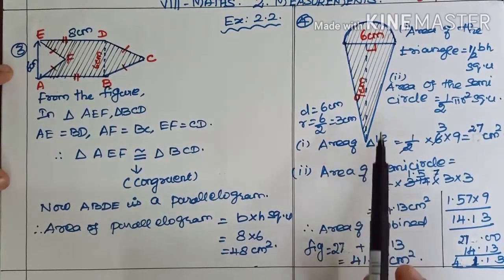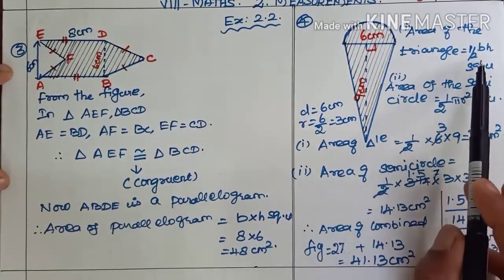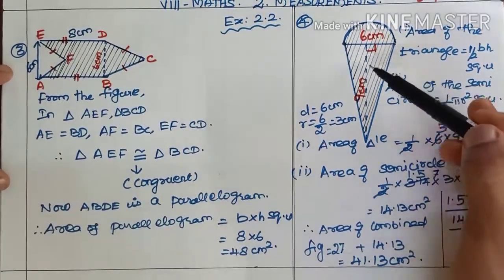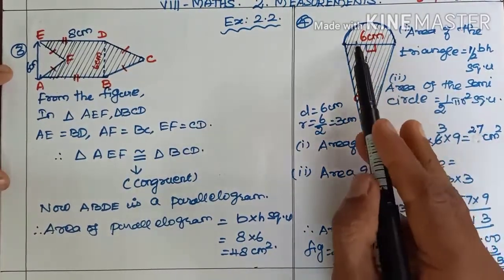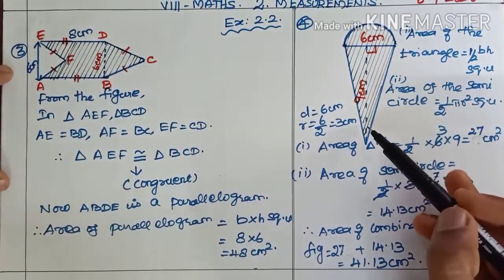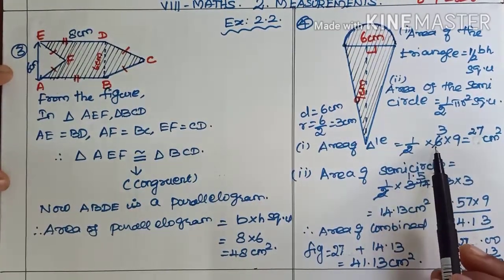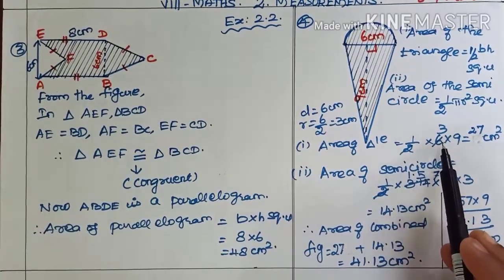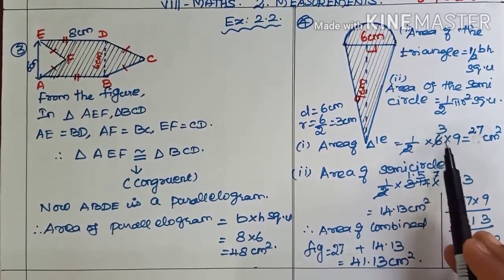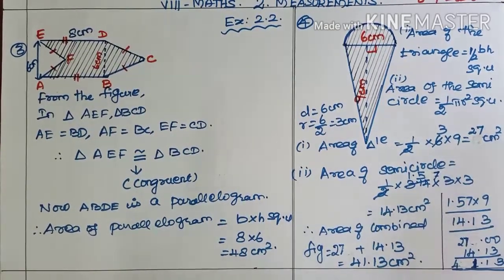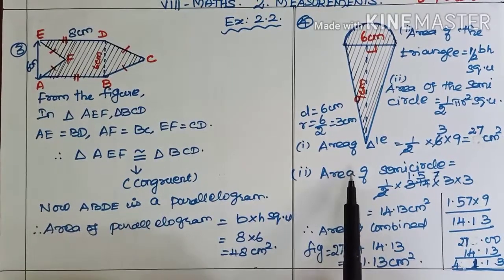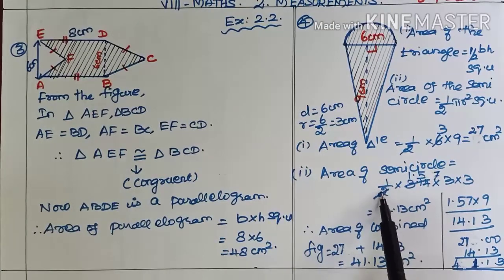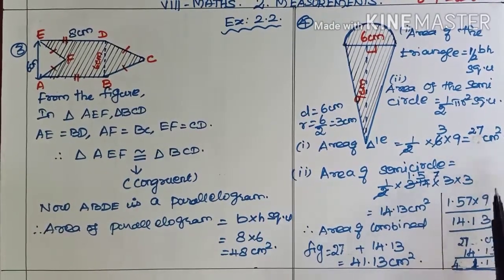Area of the triangle: ½ × b × h, base = 6 cm, height = 9 cm. So ½ × 6 × 9 = 27 cm². Now, area of the semicircle — what is the formula? ½ × π × r² square units.